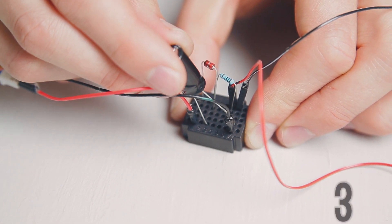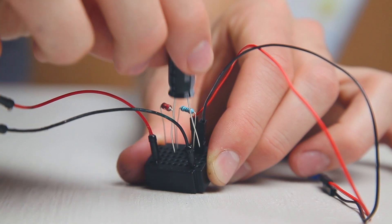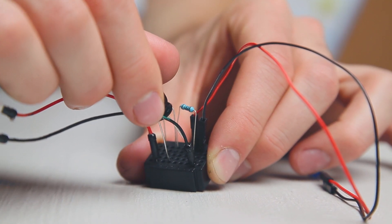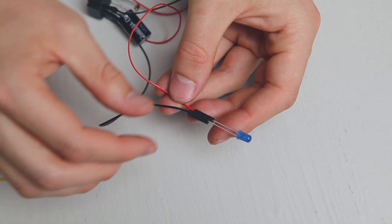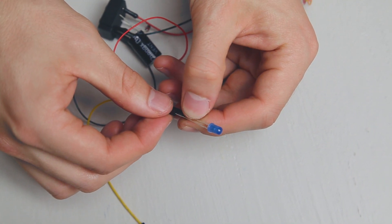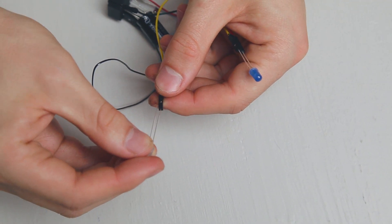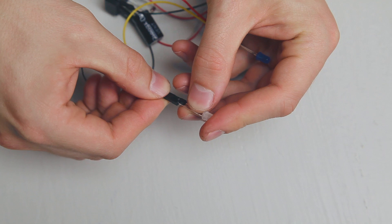Attach your capacitor between lines three and seven. Try flipping it around and see which direction works best. Next, remove the black wire from your blue LED. Attach the yellow wire. Then attach the white LED to the yellow and black wires.